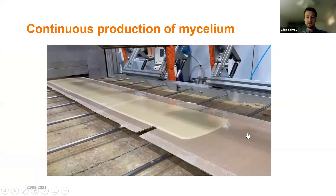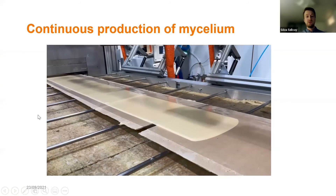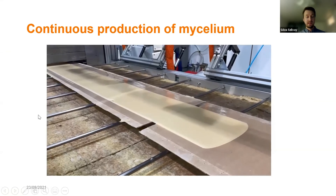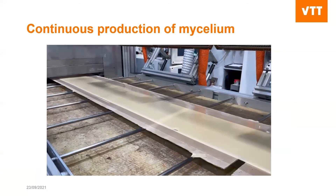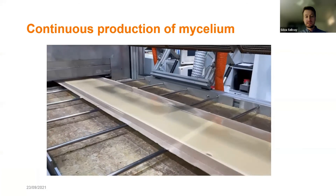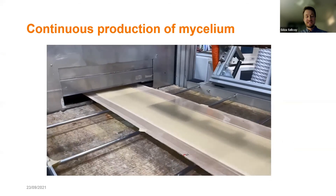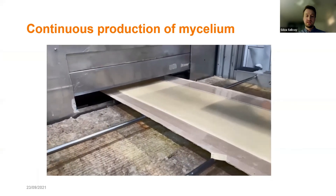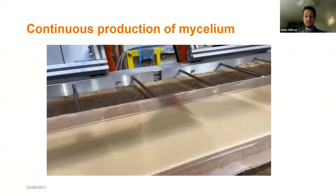This video shows how we cast the mycelium onto a plastic moving belt — we are casting at about one meter per minute, which is quite slow but it is really moving. After this casting, the film is dried and we end up with the non-woven material.